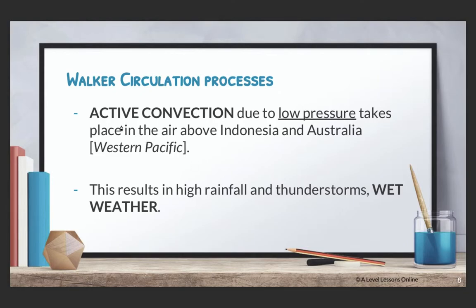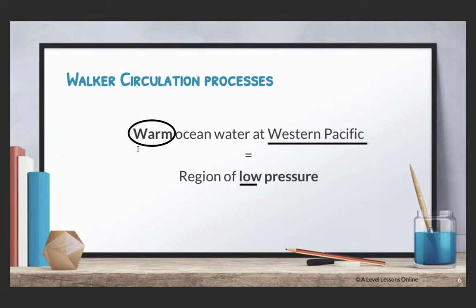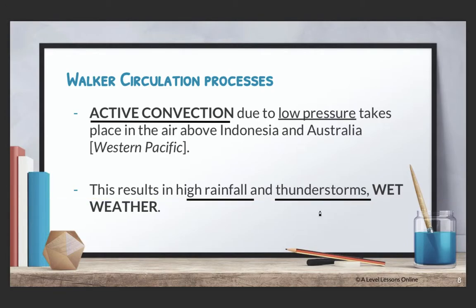So there is constant active convection occurring due to the low pressure, which takes place in the air above Indonesia and Australia — your western Pacific. As a result of the warm ocean water at the western Pacific, there's high temperature, high temperature means low pressure, and high temperature also means there will be active convection. Active convection means there is intense heat activity on the surface. This results in high rainfall and thunderstorms, resulting in wet weather. When there's high intense convection activity, there is a lot of heat in the atmosphere, which causes your air parcel to expand and rise. When it reaches your dew point temperature, it forms rain, bringing rainfall and thunderstorms.